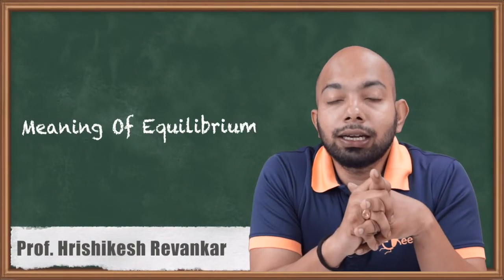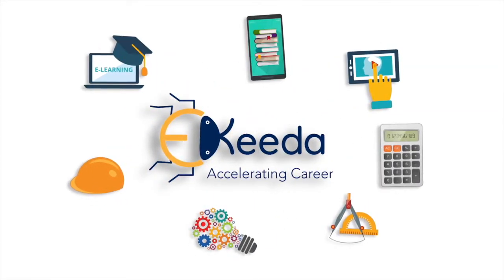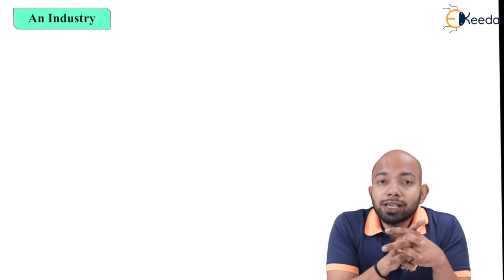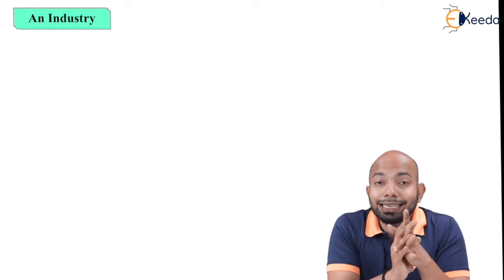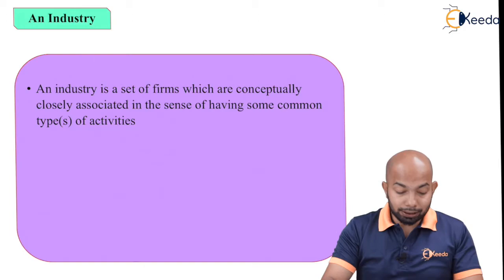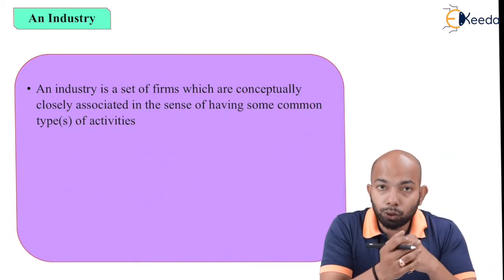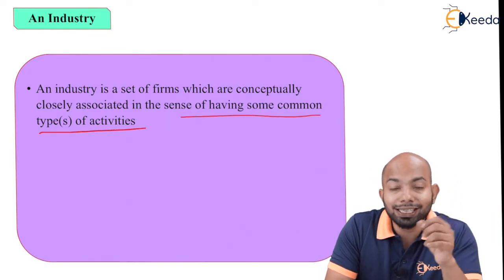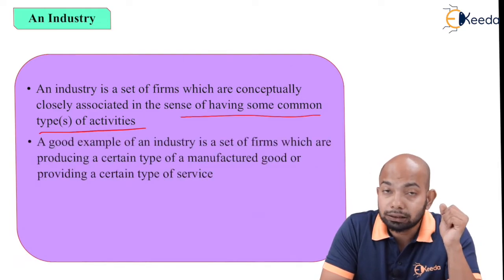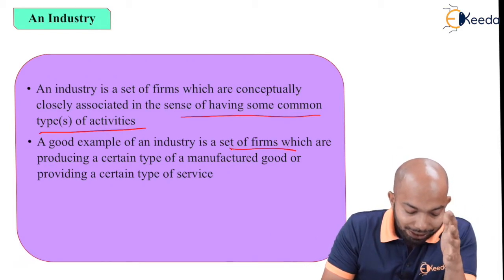We'll be discussing the second form of market, which is the industry. Earlier we discussed the firm; now we'll be discussing an industry. An industry is a set of firms — basically a compilation of all firms that are conceptually closely associated in the sense of having some common types of activities. Now what exactly are those common types of activities is what we are going to learn.